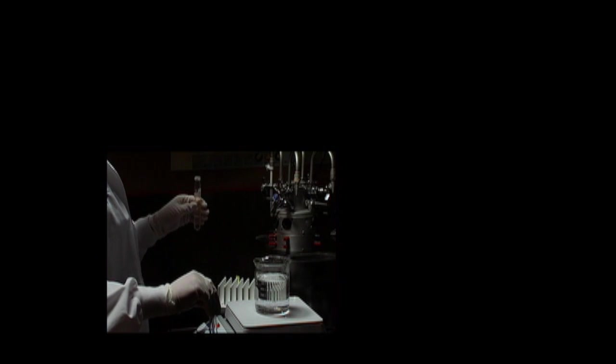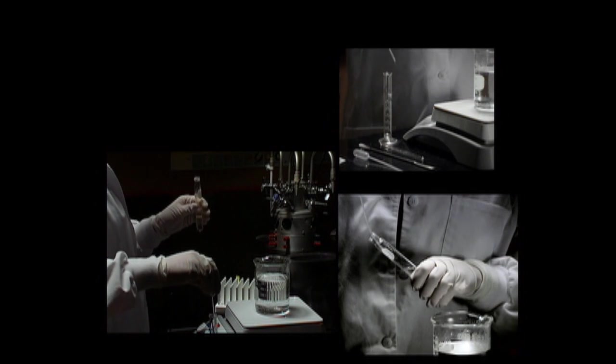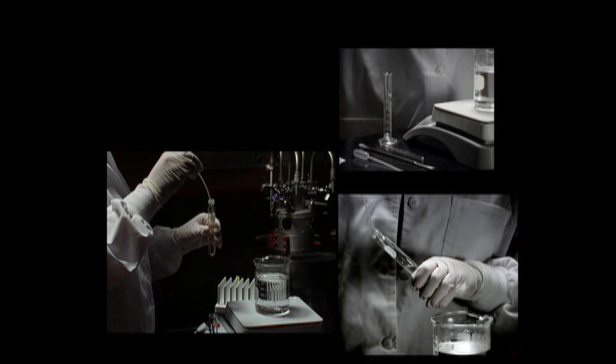Carefully layer 3 mL of 95% ethanol on top of the solution. DNA is alcohol insoluble, so it will appear in the ethanol as a white, web-like mass, called precipitate.